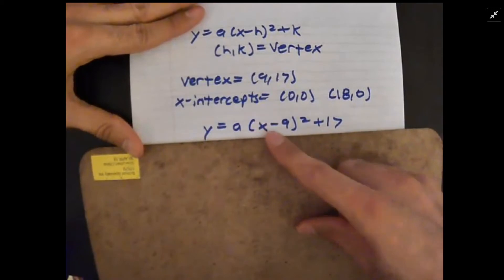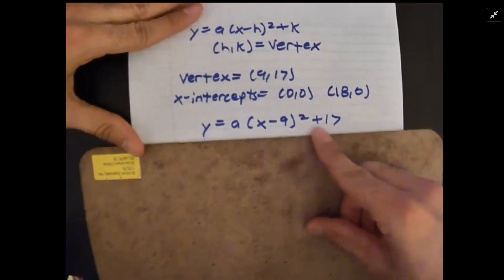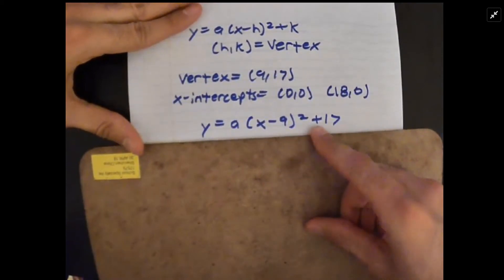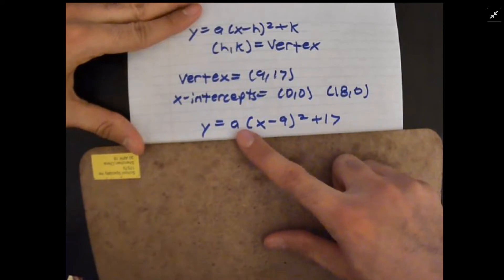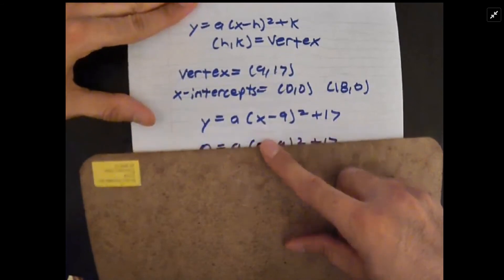We can plug in this vertex right into that equation, so y = a(x - 9)² + 17. And then we need to find a. We can do that easily by plugging in (0,0) into x and y and solving for a.